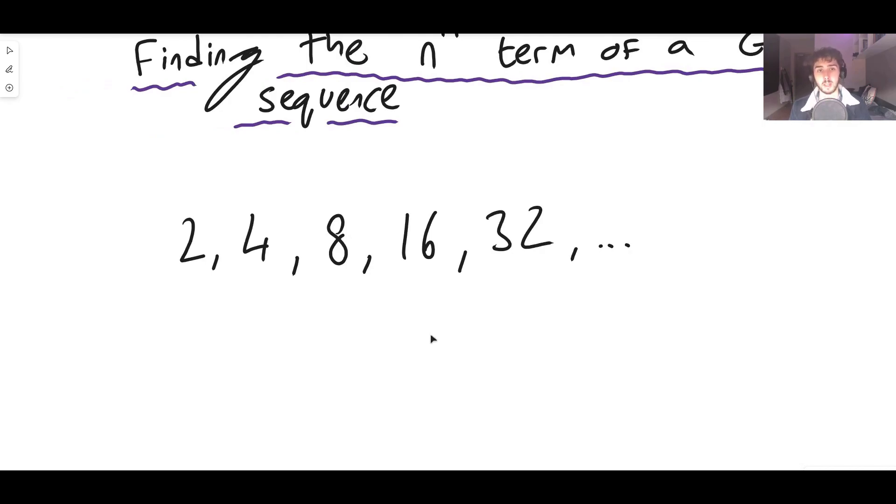So an arithmetic sequence is where the difference between each term is a constant. So for example 1, 2, 3, 4, 5, 6, 7, 8, 9, 10. That would be arithmetic.